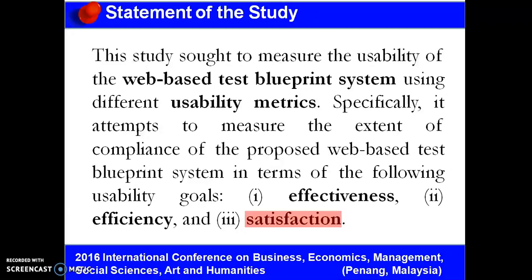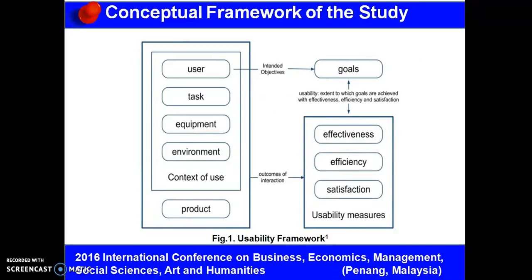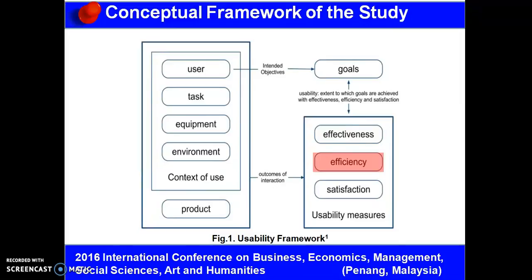These three usability goals that describe the usability qualities of a user interface can be measured through the use of usability metrics. As shown in Figure 1, the usability framework shows that usability is not a single or one-dimensional property, but rather aims for multiple usability goals, such as effectiveness, which refers to the accuracy and completeness of user goal achievement; efficiency, which refers to the resources spent by the user in order to ensure accurate and complete achievement of the goals; and satisfaction, which refers to the subjective thought of the user regarding attitude, level of comfort, acceptability of use, and relevance of application.